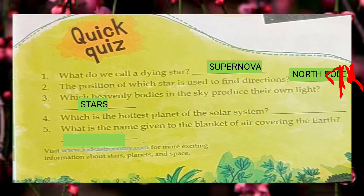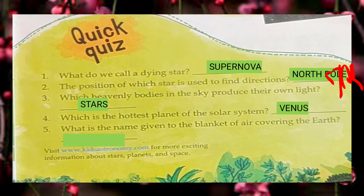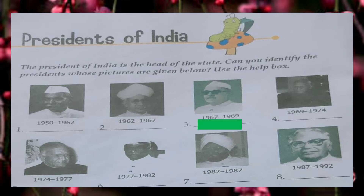Which is the hottest planet of the solar system? The hottest planet of the solar system is Venus, because it is very closest to the sun. What is the name given to the blanket of air covering the earth? That is the atmosphere.